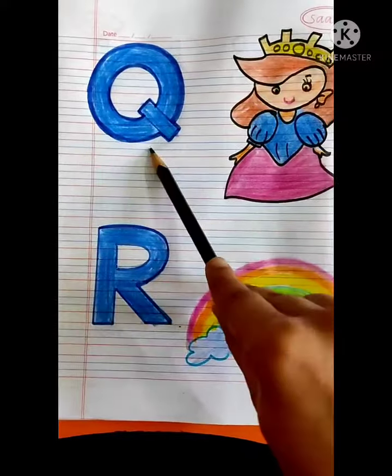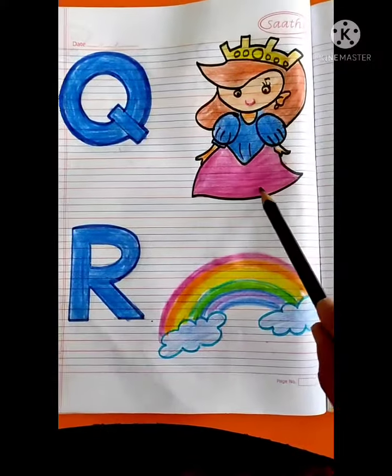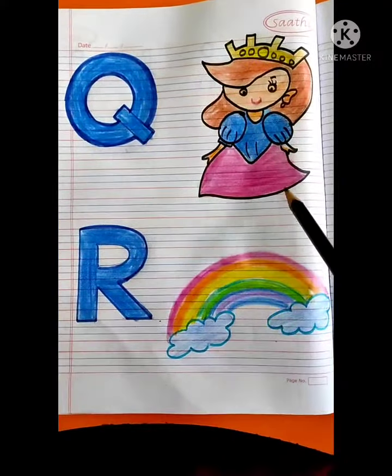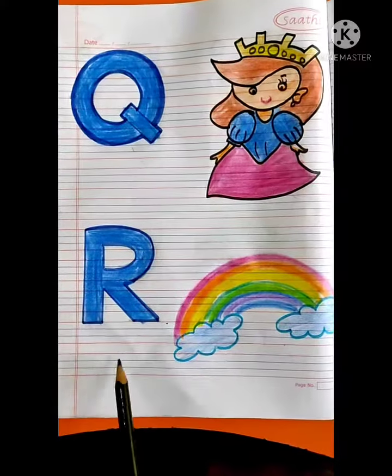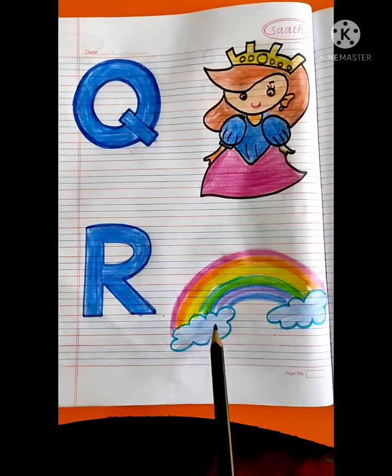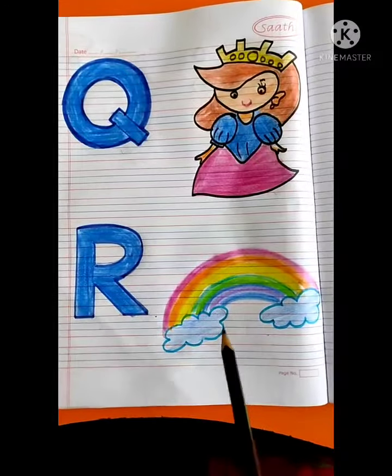So this is letter Q. Q for Queen. And this is letter R. R for Rainbow.